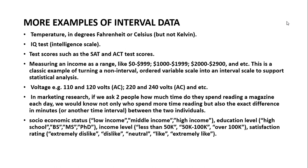More examples of interval data include temperature in degrees Fahrenheit or Celsius (but not Kelvin), IQ test scores, and income. For example, income level: low income from $0 to $99,999 — if there is a range or interval, we call it interval level data. Income levels such as less than $50,000, between $50,000 and $100,000, and over $100,000 are interval scale. Education level — high school, bachelor's degree, master's degree, PhD — also shows a higher or lower ordering.